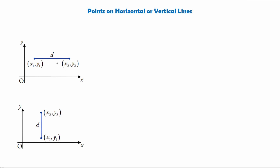Now here we have a horizontal line. What do we know about horizontal lines from National 5? Well, because they're not vertical, the y-coordinate will always be the same at any point along the line. So we can say that y1 is going to be equal to y2 — but that's pretty much a given so we can just ignore that.